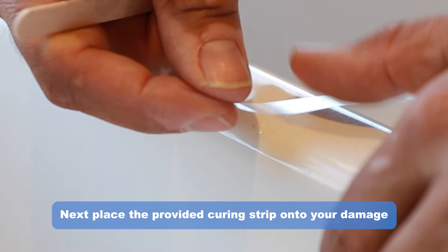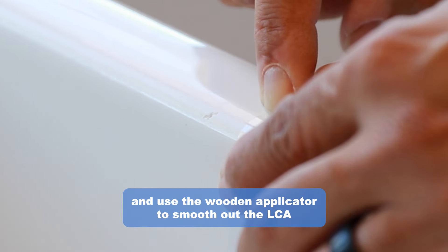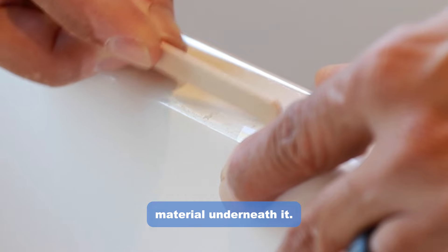Next, place the provided curing strip onto your damage and use the wooden applicator to smooth out the LCA material underneath it.